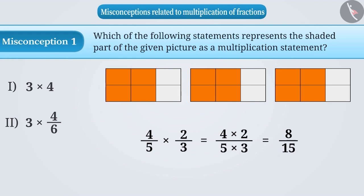This is why the shaded portion of the given picture is expressed incorrectly as multiplication. As some children think that there are four shaded parts in each rectangle, so the shaded portion of three rectangles can be detected by this multiplication 3 into 4. So, they would choose option 1 as the correct answer.